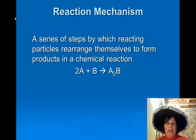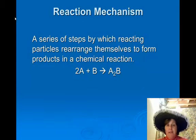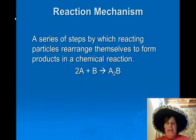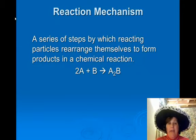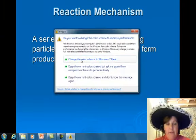Mechanism, what is it? A series of steps by which reacting particles rearrange themselves to form products in a chemical reaction. So, for example, as you can see here, 2A plus B yields A2B. It's just a regular old chemical reaction, but mechanism is a little bit different. Between the reactants and products, a variety of different things.